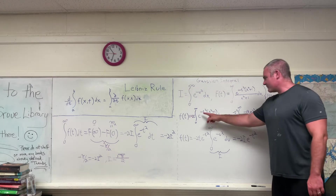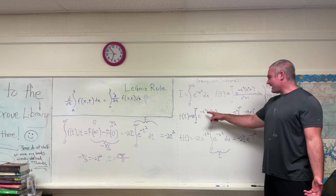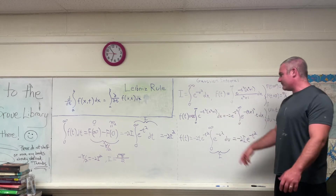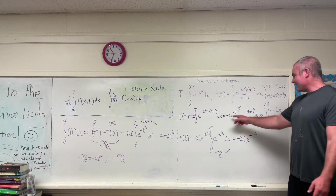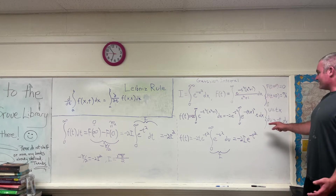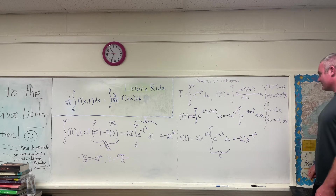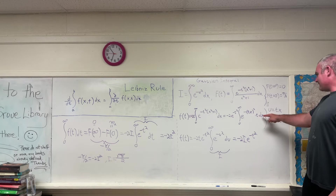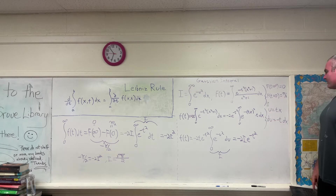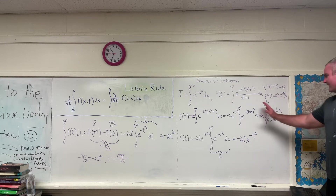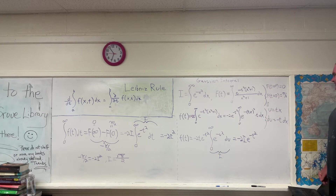Pause the video if you want to verify that. Basically, I'm splitting this up as e to the negative TX squared times e to the negative T squared, bringing the e to the negative T squared outside the integral because it's a constant with respect to x, and then bringing the T inside because it's going to help us with our U substitution. Our U substitution is right here — we're going to make a substitution where U is equal to TX.